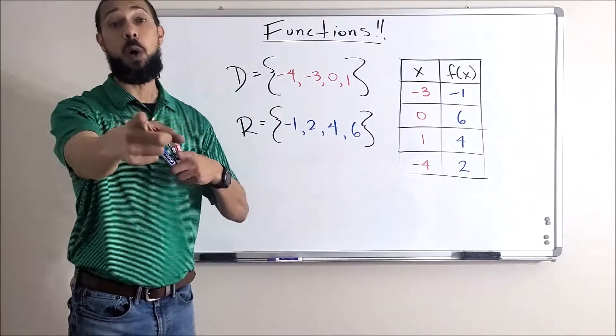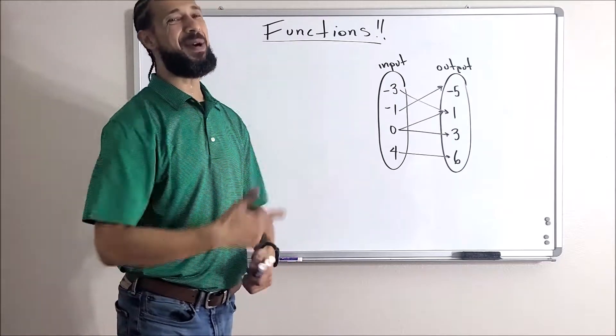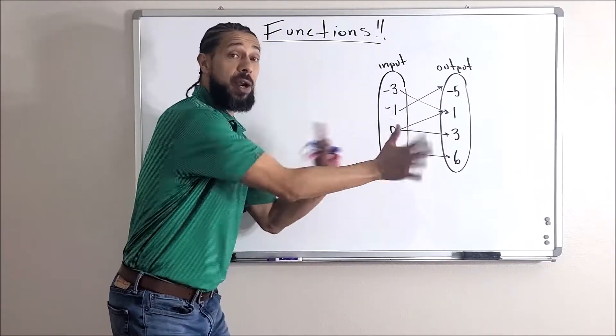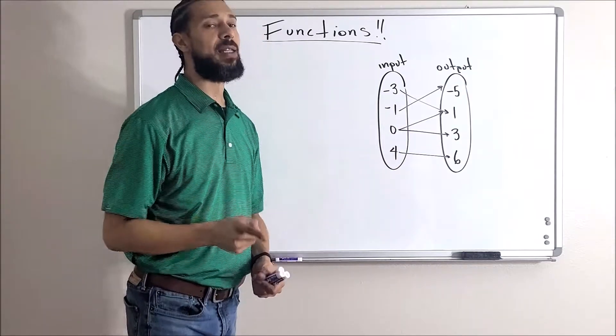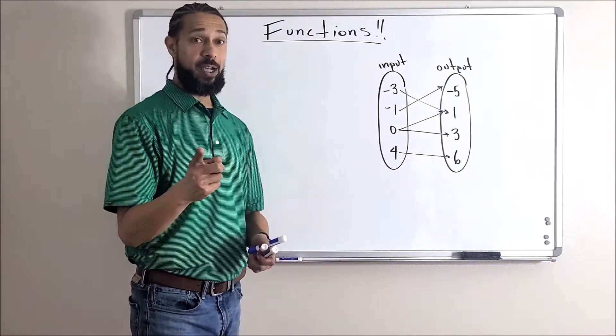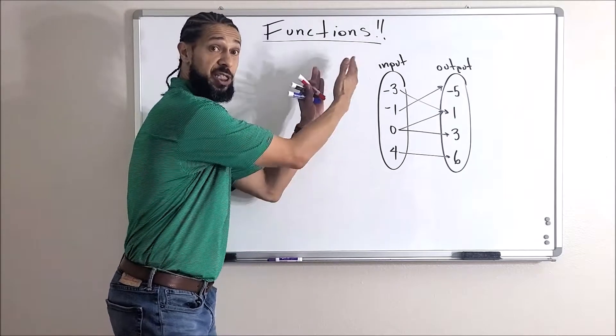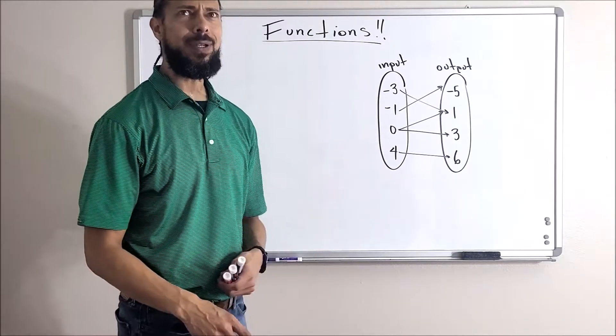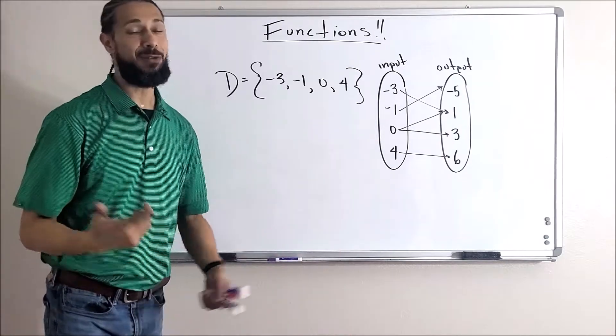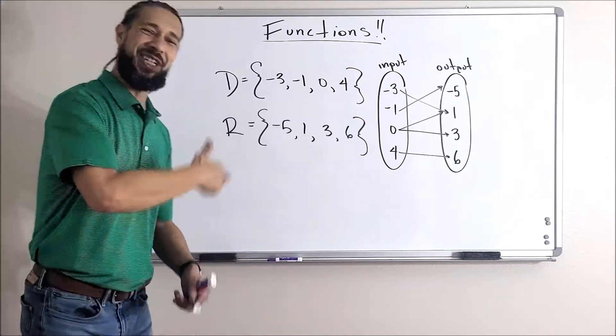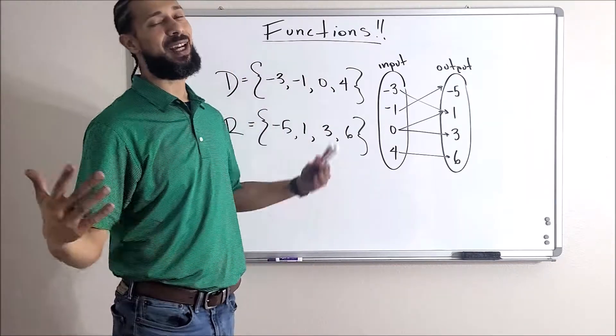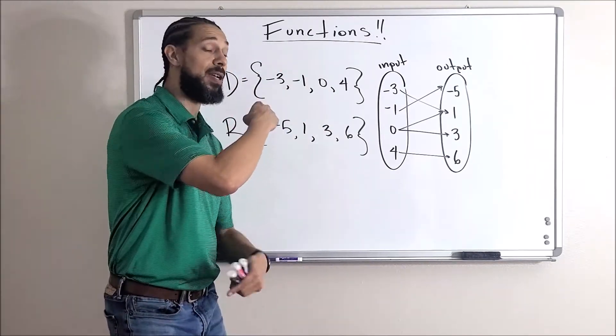Let me show you one more. You remember the mapping, right? Now double arrows is not a function, but we can still write down the domain and the range. The domain is of course a collection of the inputs, and on mappings they're already in order for you. Range is just as simple. Domain is a collection of the inputs, range is the collection of the outputs. Domain x, range y.